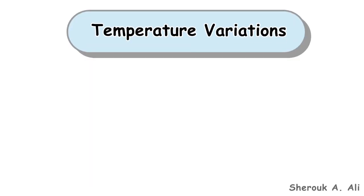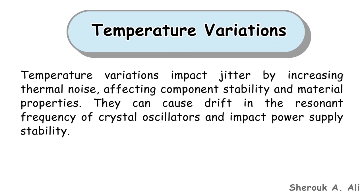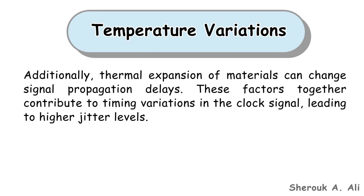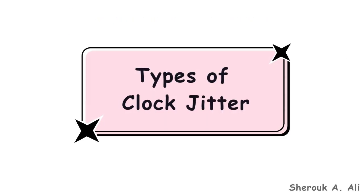Another reason is temperature variations. Temperature variations impact jitter by increasing thermal noise, affecting component stability and material properties. They can cause drift in the resonant frequency of crystal oscillators and impact power supply stability. Additionally, thermal expansion of materials can change signal propagation delays. These factors together contribute to timing variations in the clock signal, leading to higher jitter levels.